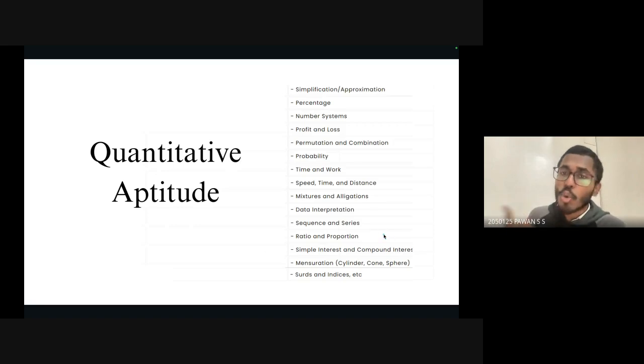Speaking about quantitative aptitude, it's very important with no compromise. If you're a law officer working in this terrain, it's equally important to learn percentage, number system, profit and loss, permutation, combination, probabilities, time and work, speed time distance, mixtures, allegations, data interpretation, ratio, proportions, simple interest, compound interest, and mensuration. Quantitative aptitude plays a very important and crucial role in your solving capacity for prelims.